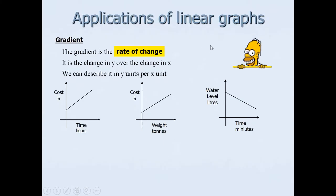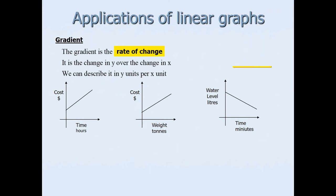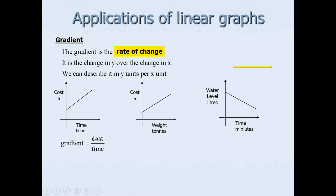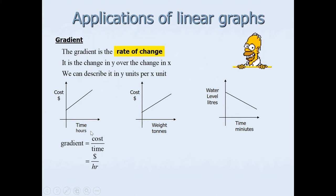Let's look at the applications of linear graphs. The gradient is the rate of change — change in y over change in x, as explained in the previous video. For the first graph, cost is in dollars and time is in hours. So the gradient is change in cost divided by change in time, giving a rate — in this case, charge per hour.